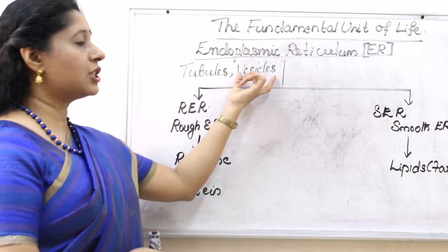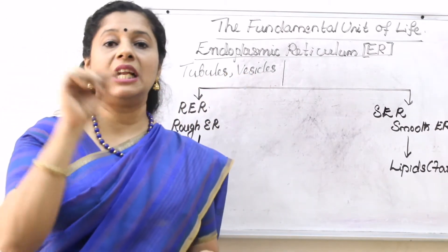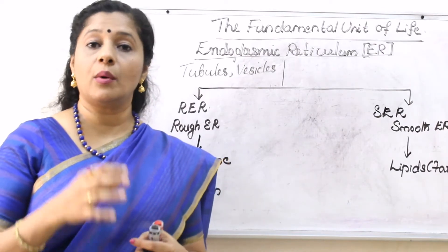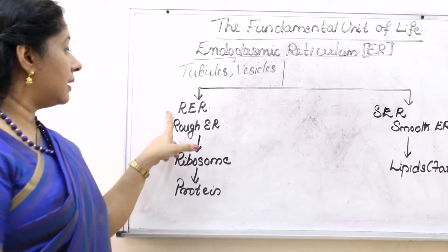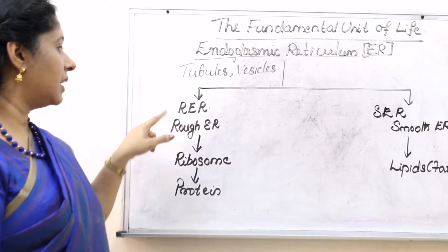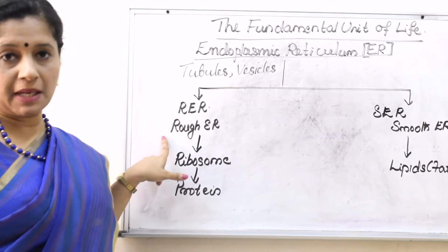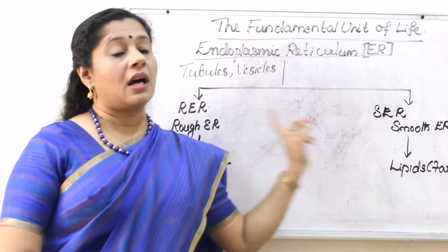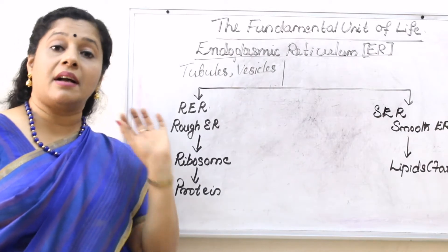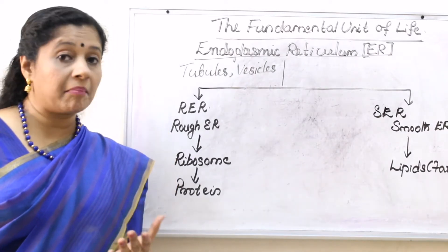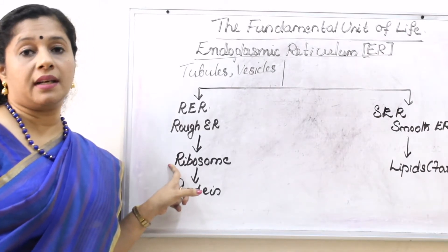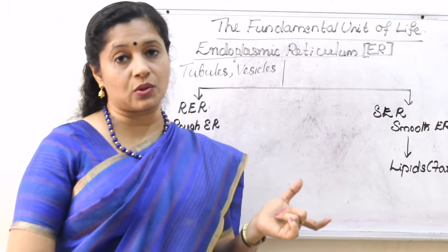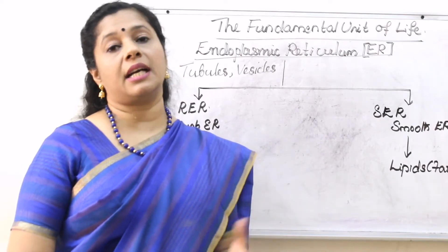They appear as tubules or vesicles. These membrane-bound structures, if they are elongated and tube-like, they are called tubules. If they are just a bag-like structure, they are called vesicles. Now, the endoplasmic reticulum can be divided into two types: first is RER or rough endoplasmic reticulum, and SER or smooth endoplasmic reticulum. RER is rough because they appear rough under the microscope. Why? Because they have ribosomes on their surface. Whereas smooth endoplasmic reticulum appear smooth under the microscope because they do not have ribosomes attached to them.